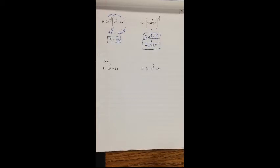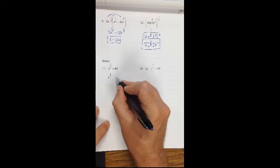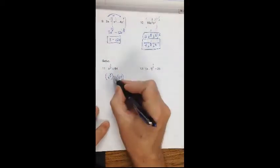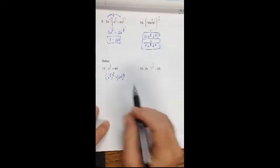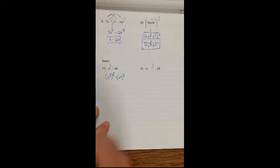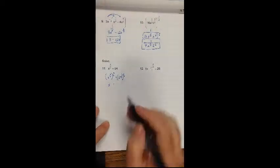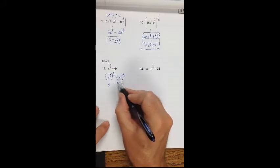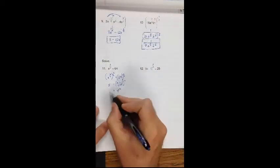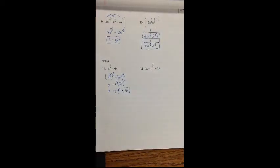Solving equations on 11 and 12. For number 11: x to the 3 halves equals 64. I need to get rid of the 3 halves, so I raise both sides to the 2 thirds power — the reciprocal — since 3 halves times 2 thirds equals 1. I get x to the 1st equals 64 to the 2 thirds. That is the third root of 64, then squared. The third root of 64 is 4, and 4 squared is 16, so x equals 16.